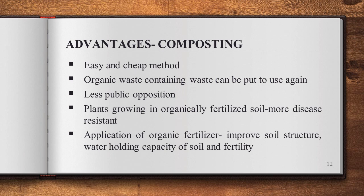Next, advantages of composting. Compared to other methods, composting is an easy and cheap way to make nutrient-rich fertilizer. Organic waste containing nutrients can be put to use again; otherwise it would decay and nutrients would be lost. Composting has less public opposition compared to other disposal methods like incineration and landfill. Organic fertilizer contains many trace elements not normally found in chemical fertilizers, and plants grown in organically fertilized soil are more disease resistant than in soil with artificial fertilizer only.